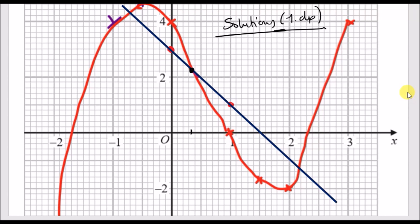To find the solutions it's basically the points of intersection — they only want the x coordinates. The first solution occurs somewhere around x equals 0.3 to 0.4. The second intersection is around x equals 2.2. The last one is around x equals minus 0.7. These are the answers you need — note the mark scheme will give more exact results, so check against that.